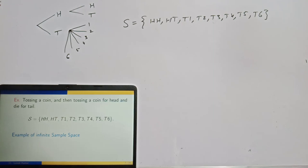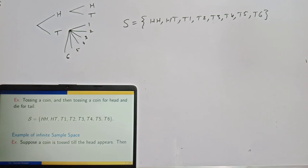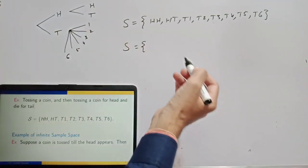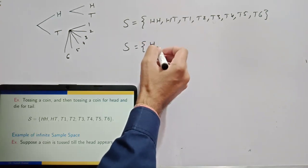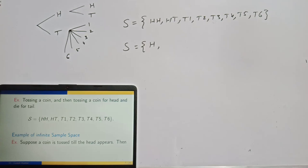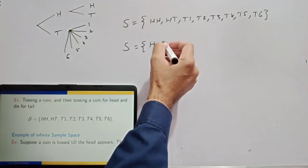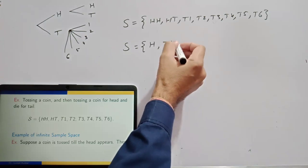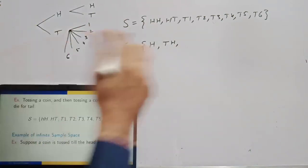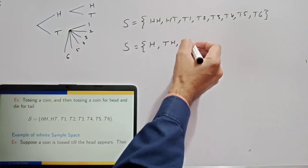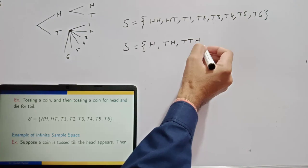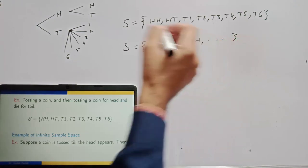Here is an example of an infinite sample space. Suppose a coin is tossed until the head appears. The possibilities are: head on the first attempt (H), tail then head (TH), tail-tail then head (TTH), and so on. The sample space goes on indefinitely, so it is an infinite sample space. Sample space need not be finite — it could be infinite.